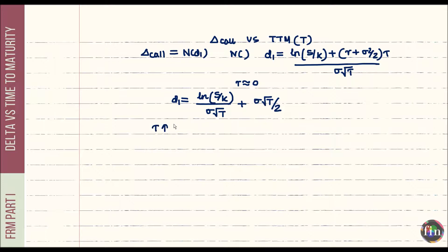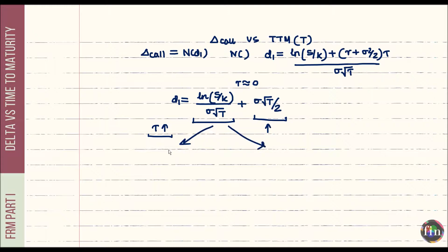Now let's bump T up and see the effect. The second term goes up because root T sits in the numerator. The first term has root T in the denominator, so its behavior depends on the sign of the numerator. In Case 1, ln(S/K) is positive — that's when S is greater than K, which is the in-the-money case.